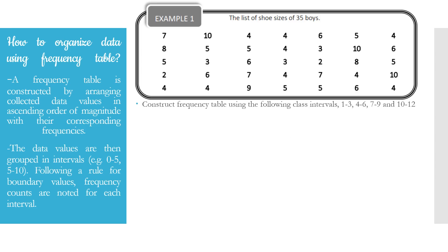Now let us learn how to organize data using a frequency table. A frequency table is constructed by arranging collected data values in ascending order of magnitude with their corresponding frequencies. The data values are then grouped in intervals — for example, from 0 to 5, 5 to 10, and so on — following a rule for boundary values, and frequency counts are noted for each interval. In this example, the intervals are 1 to 3, 4 to 6, 7 to 9, and 10 to 12.